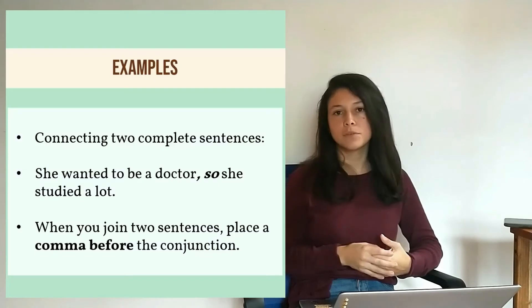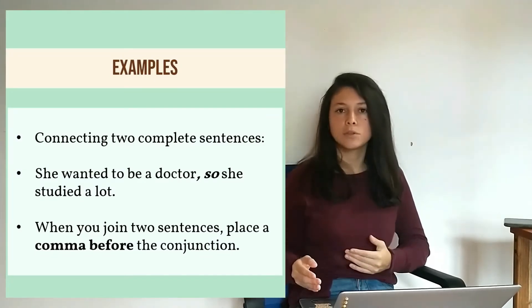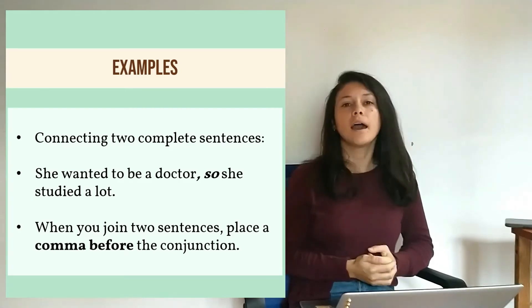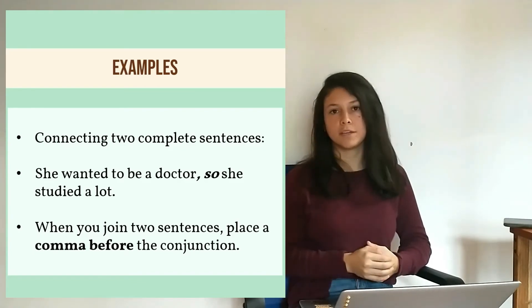And an example of coordinating conjunctions connecting two sentences would be: She wanted to be a doctor, so she studied a lot. As you can see, if we're connecting two sentences, we need a comma before the coordinating conjunction.